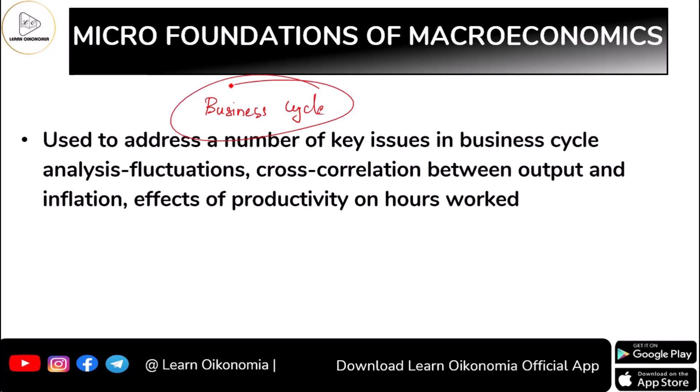The Smets-Wouters model is used for business cycle analysis, taking into consideration the fluctuations that happen in the business cycle. You can go for a cross-correlation that takes into consideration the relation between output and input. You can also take into consideration the role of inflation, productivity, etc., as far as microeconomic foundations of macroeconomics is concerned.